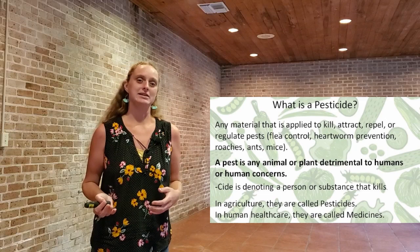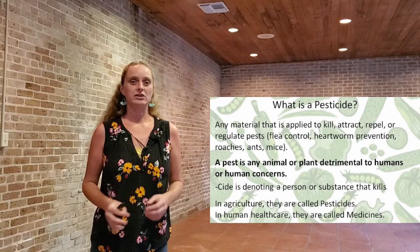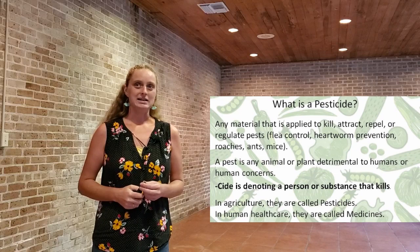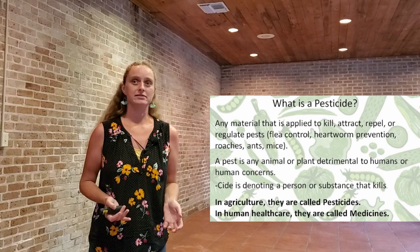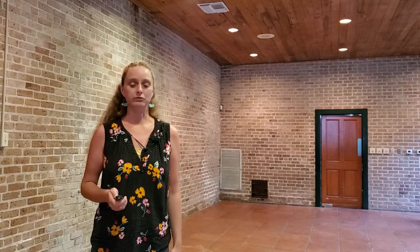So in your garden, that might mean the things that are munching on your vegetables that make them not fit to eat. Pests do occur in all gardens, and managing them is a big part of gardening. The suffix "-cide" — C-I-D-E — refers to a person or a substance that kills. So anytime you see that, you know it's intended to kill something. In agriculture they're called pesticides, but in human health care these products are called medicine.